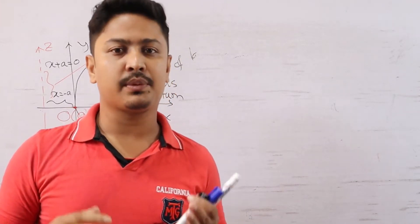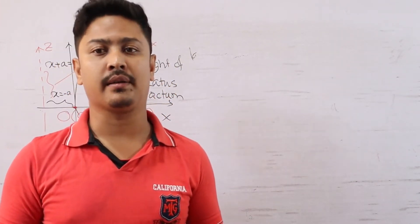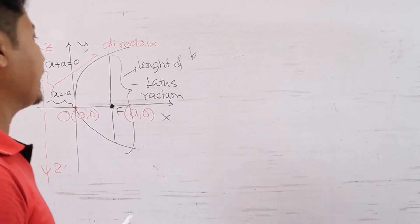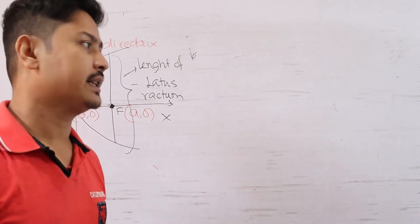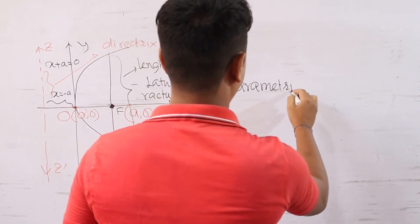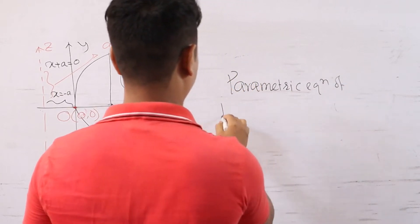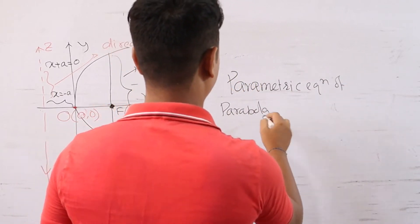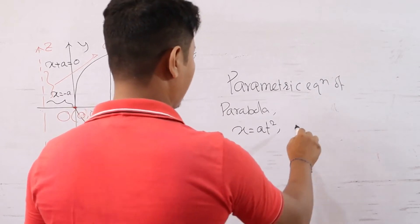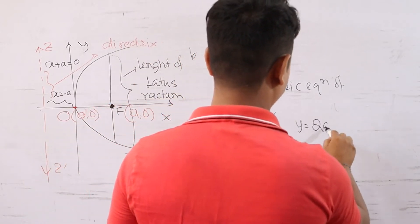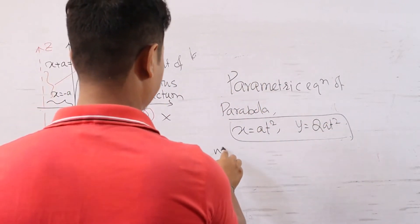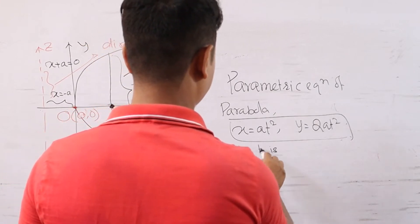Now the parametric equation of parabola: x = at², y = 2at. So the parametric equations are x = at² and y = 2at, where t is any parameter.